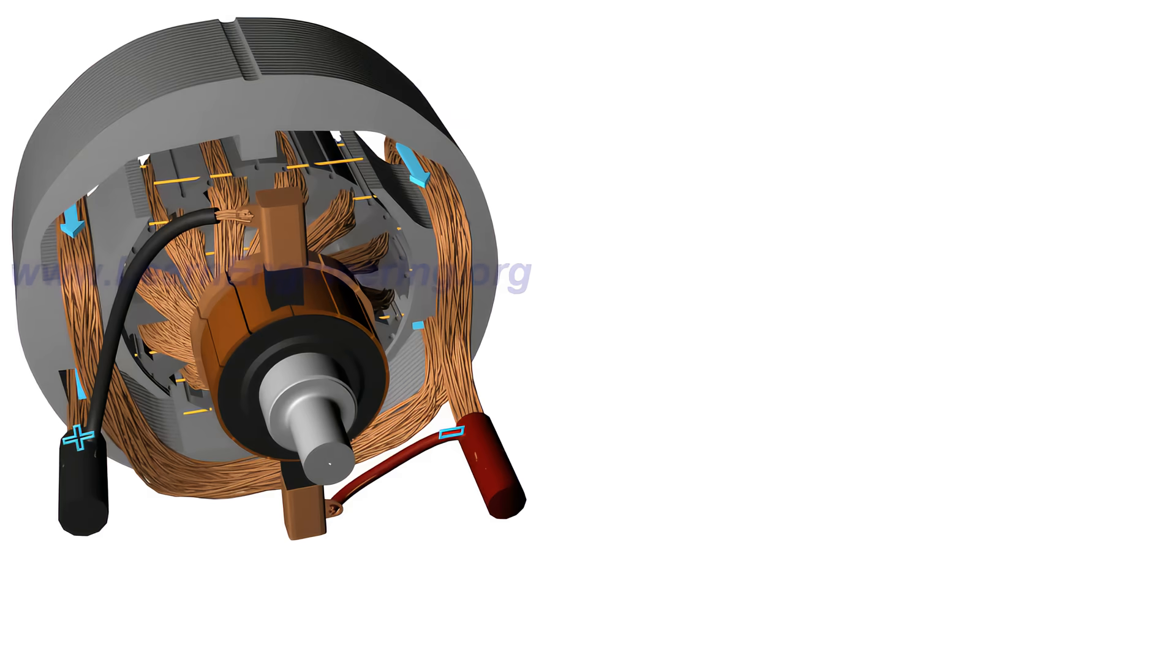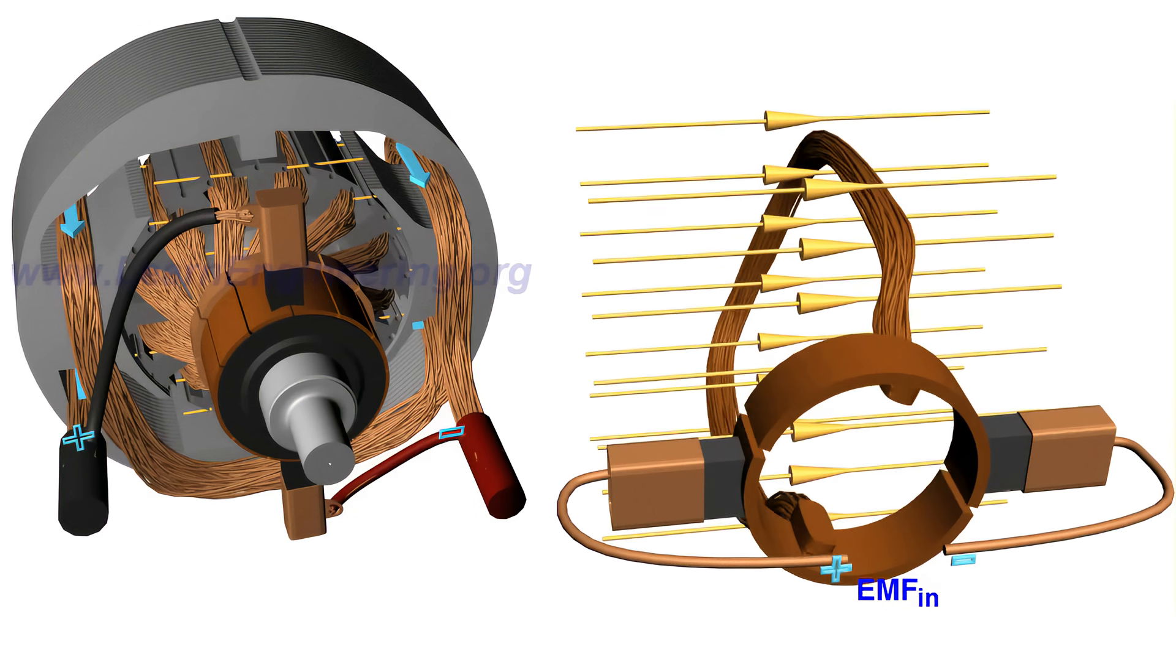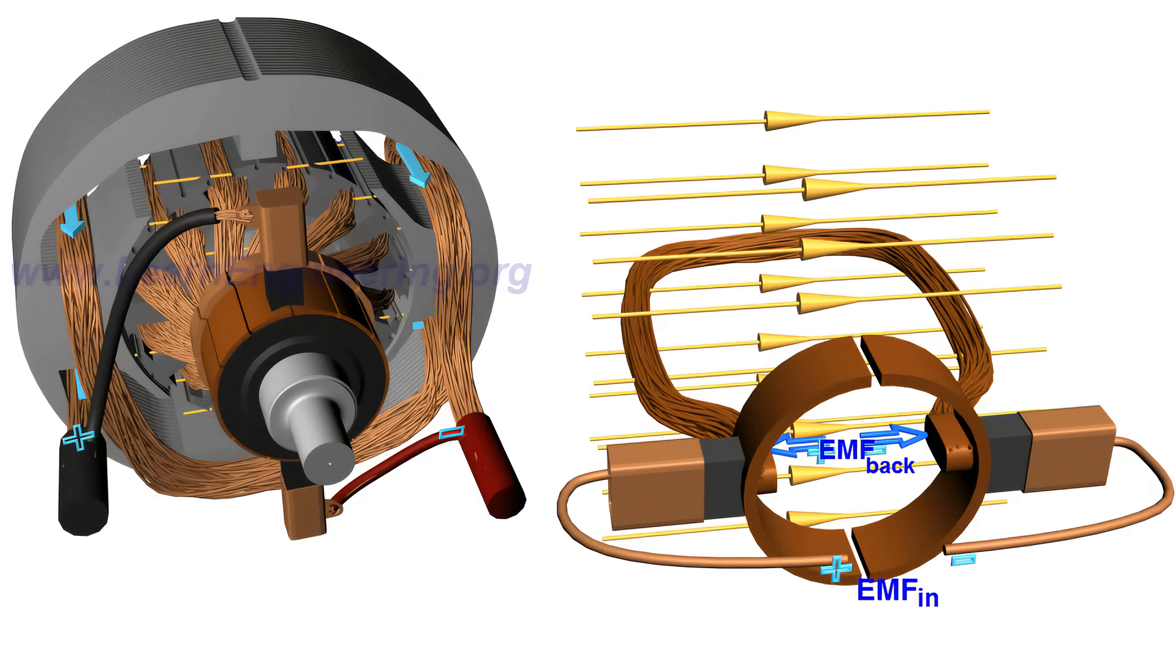The case of rotating armature loops is also the same. An internal EMF will be induced that opposes the applied input voltage. The back EMF reduces armature current by a large amount.